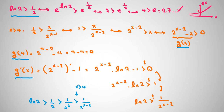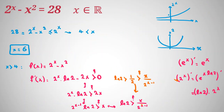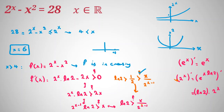Since g of 4 equals 0 and g is increasing for x greater than 4, we have g of x greater than 0 for all x greater than 4. This proves f prime of x is positive, so f of x equals 2 to the x minus x squared is increasing for x greater than 4. At x equals 4 the function equals 0, and at x equals 6 we get 28 — our answer. Because the function is increasing, x equals 6 is the only solution.